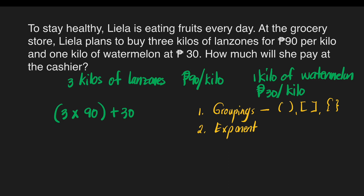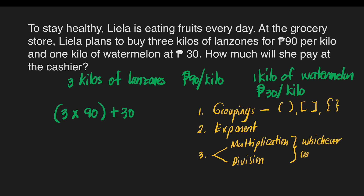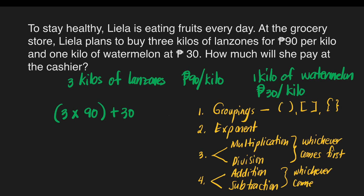Third, perform multiplication or division from left to right, or whichever operation comes first. So in third spot, we have two operations: multiplication and division — whichever comes first. Lastly, perform addition or subtraction from left to right, or whichever operation comes first. So we write addition and subtraction — whichever comes first.